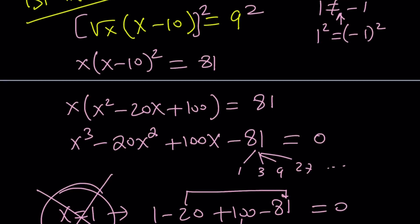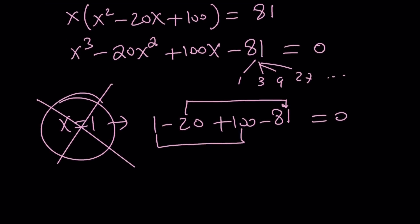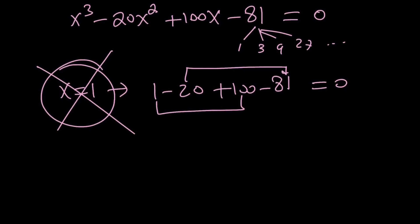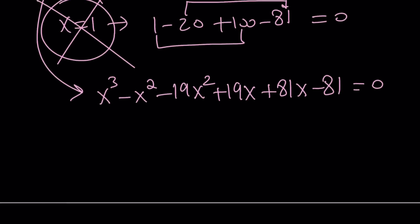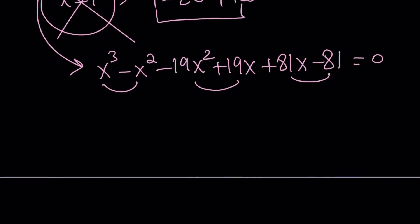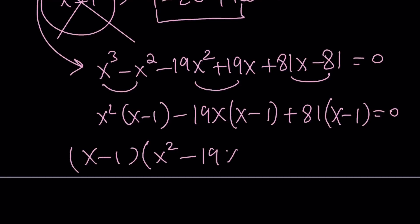What do we do with that? Well, x equals 1 doesn't work, but maybe we're going to find other roots. x equals 1 is going to help us factor this expression because if you think about dividing it by x minus 1 or just arranging the terms like this: x cubed minus x squared minus 19x squared plus 19x plus 81x to get 100x, that's what we need, minus 81 does the trick. And now you have a factorable expression. Take out x squared, take out minus 19x, and take out 81. Awesome. We knew that x minus 1 would be a factor, so take out that, and you get the quadratic x squared minus 19x plus 81.